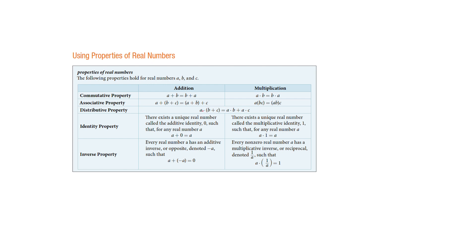I'm sure you're familiar with the distributive property if you've had Algebra 1. If you have three times (x plus two), you've got to give the three — you multiply the three. You distribute it to multiply times everything on the inside. So they're distributing by multiplying by b and then multiplying by c.